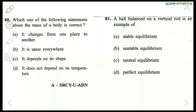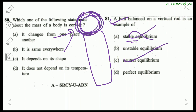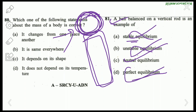Question 81: A ball balanced on a vertical rod — what type of equilibrium is this? It is not stable equilibrium because if displaced, the ball won't return to its original position. It is not unstable because it can rest if not displaced. There is no term 'perfect equilibrium.' So the answer is neutral equilibrium.